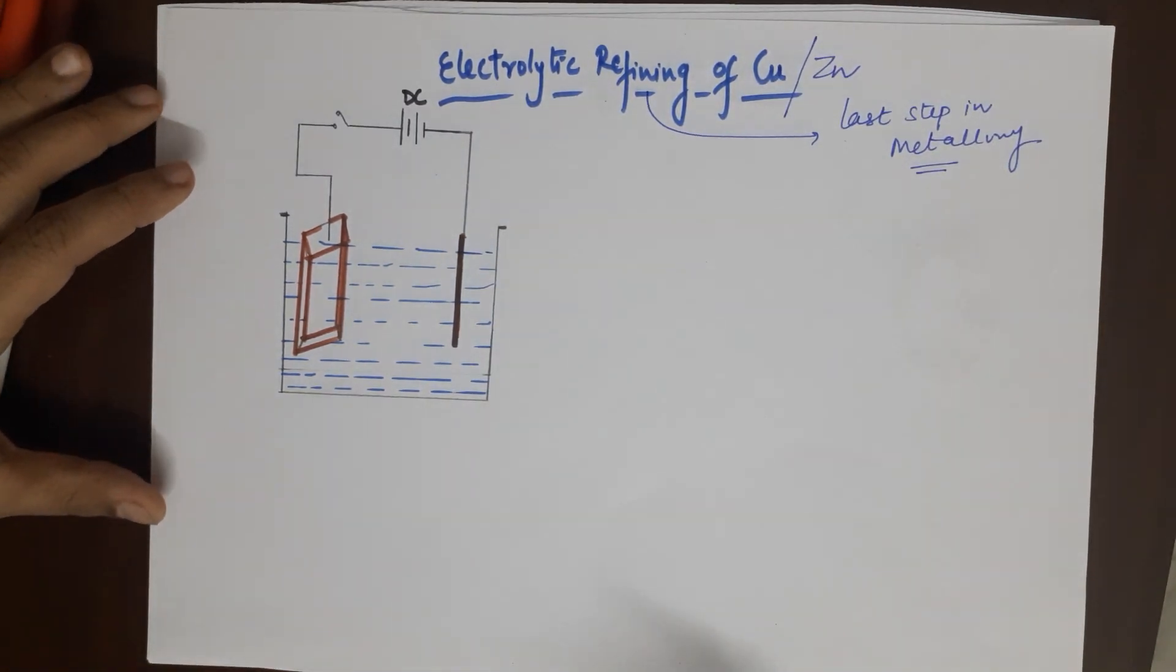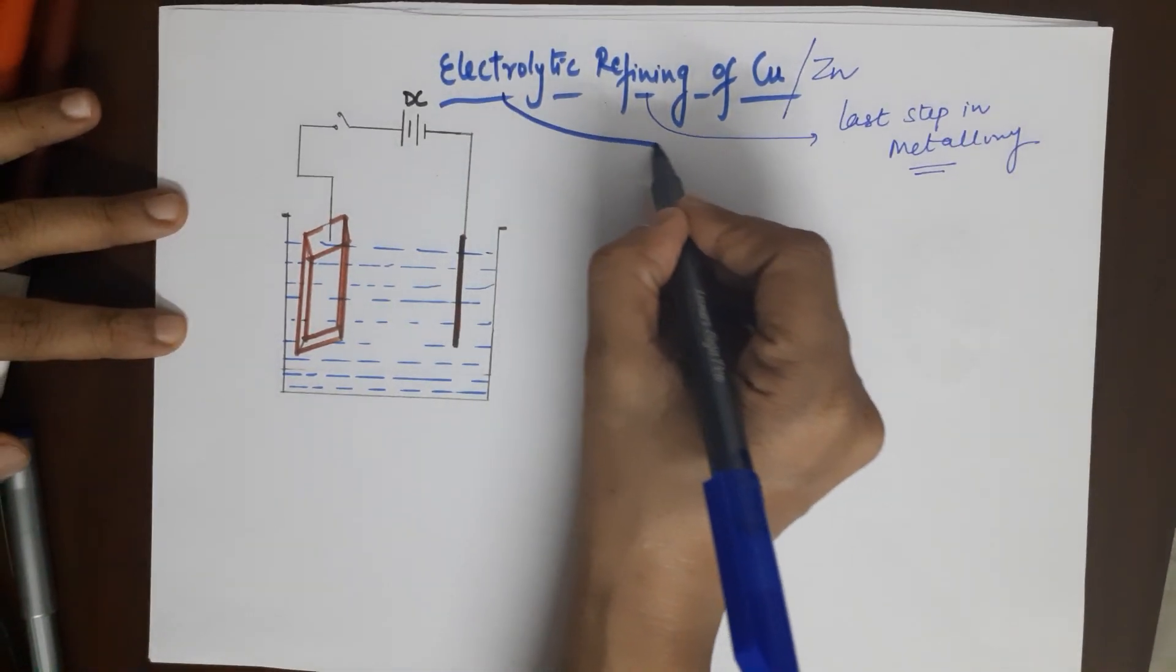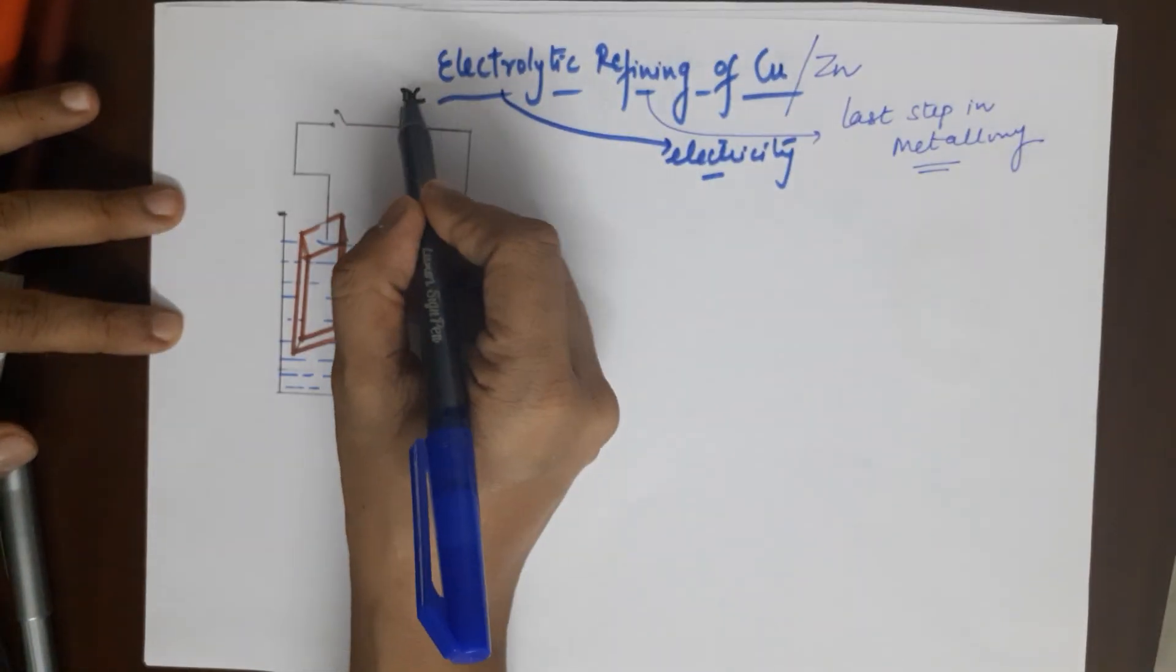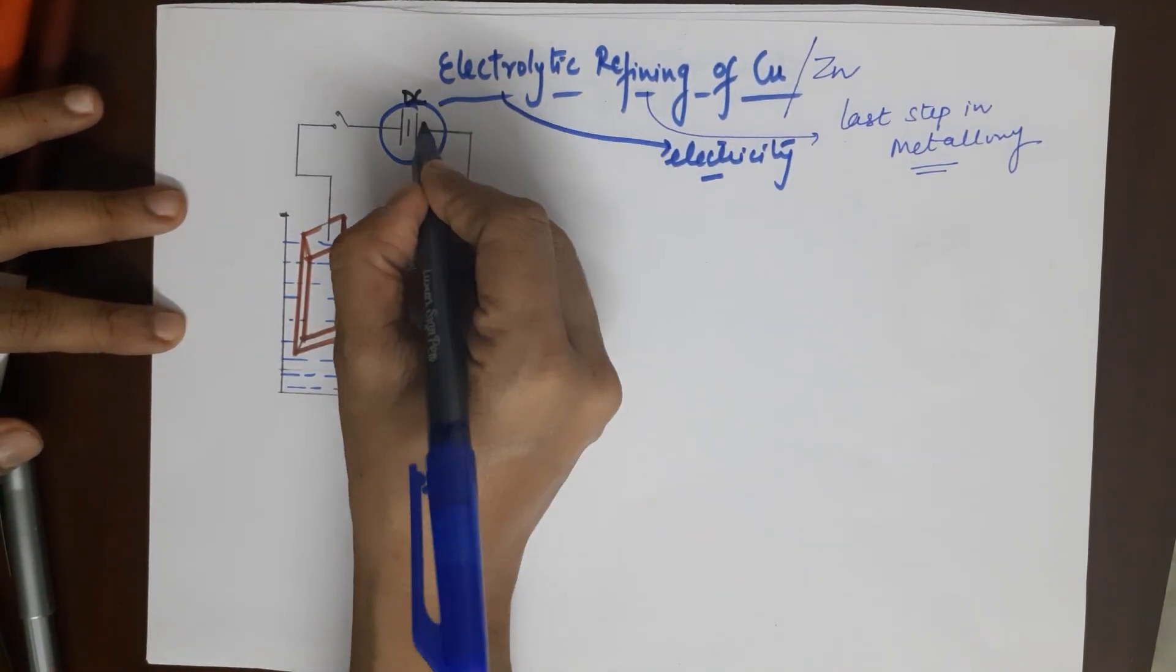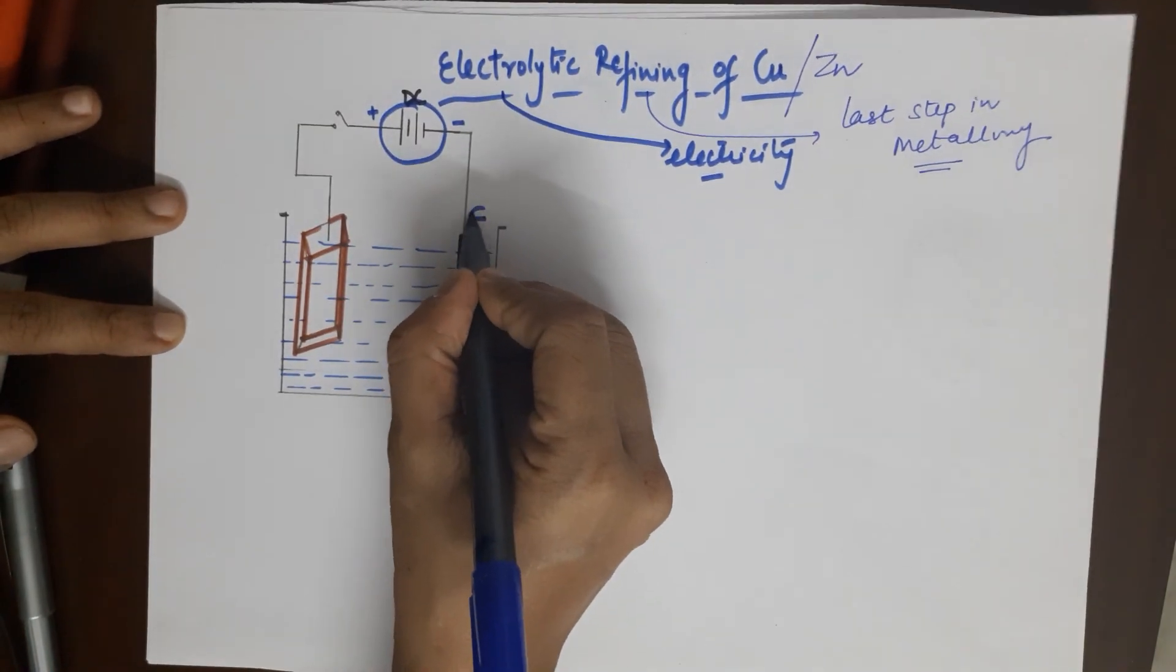Let's begin with the construction. The construction of the cell is as shown here. Electrolytic means you are going to use electricity and you need a battery for this. This is your negative terminal while this is your positive terminal.